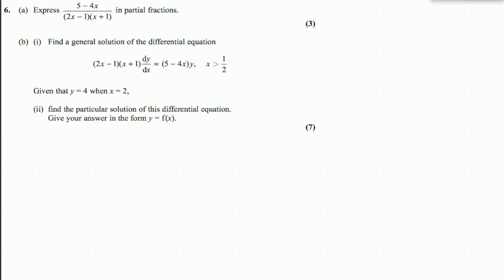This is the sixth question of the C34 June 2014 exam. The first part asks us to express 5 minus 4x over 2x minus 1 times x plus 1 in partial fractions.